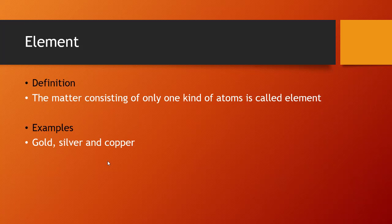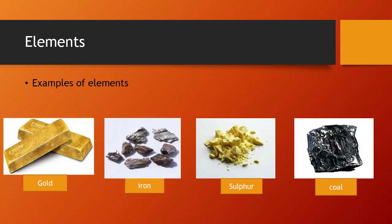Let's start our today's topic: Element. First of all we will see the definition of element. The matter consisting of only one kind of atom is called an element. For example, gold, silver, and copper. Some more examples of elements are gold, iron, sulphur, and coal, which is a form of carbon.